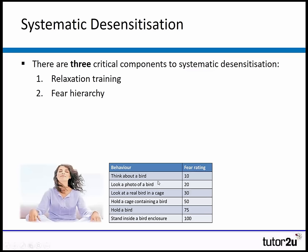For example, applied to Tommy: thinking about a bird might be rated 10 out of 100; looking at a photo of a bird, 20; looking at a bird in a real cage, 30; holding a bird cage, 50; holding a bird itself, 75; and standing inside a bird enclosure, 100. You can see how situations get progressively worse for someone with that fear. Developing a fear hierarchy is step two, often done with your therapist.